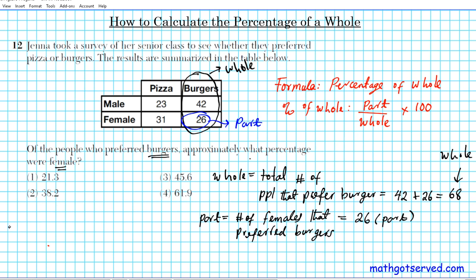Let's write out our statement: the percentage of females who prefer burgers. Now using the formula is going to be part which is 26 divided by whole which is 68 multiplied by 100 and that should give us our desired results. Let's go ahead and fire up our calculators.